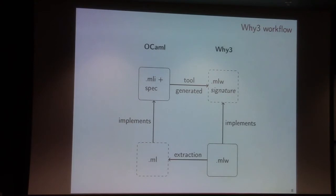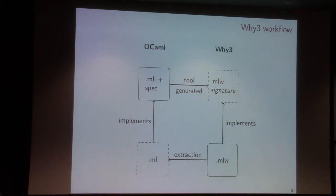The next step is to extract code. We use the Why3 extraction mechanism to get actual OCaml code, and this extracted code must comply with the types I declared in my signature. The two dashed blocks represent elements that are tool-generated automatically, and the solid ones are elements that we are going to keep writing manually.